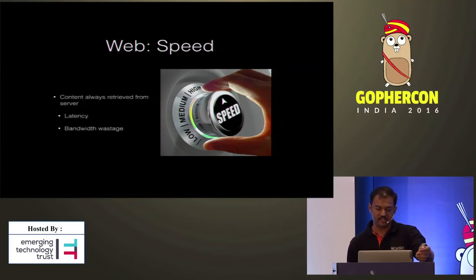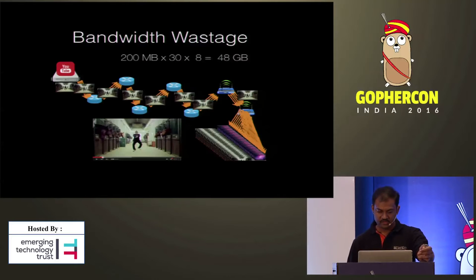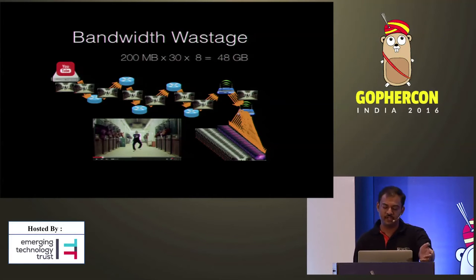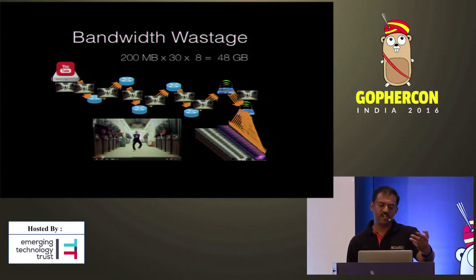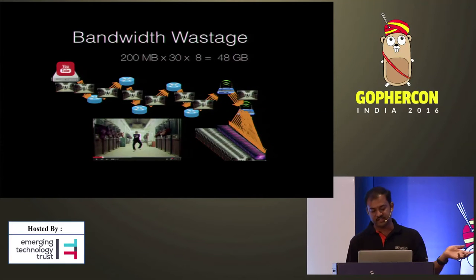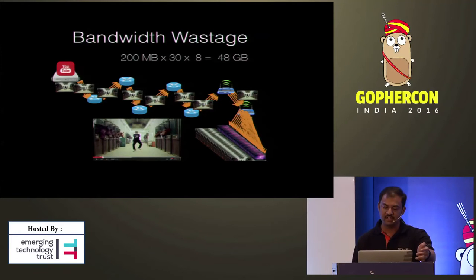To understand this clearly, consider that 30 of us here in this room received a link to a video and all wanted to watch it. We started downloading and if we each have to travel across eight servers, we will end up wasting 48 GB of bandwidth just to watch the same video which is only 200 MB.